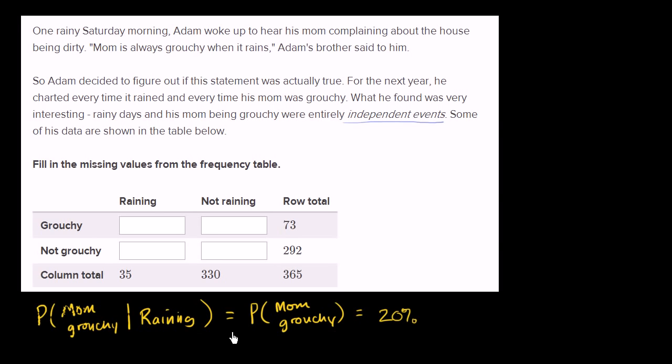And so we should have the probability of mom being grouchy given that it's raining should be 20% as well. So given that it's raining, we should also have 20% of the time mom is grouchy, because these are independent events. It shouldn't matter whether it's raining or not.